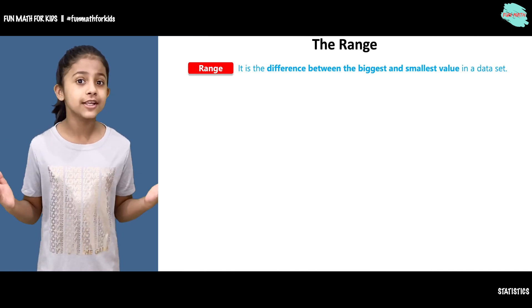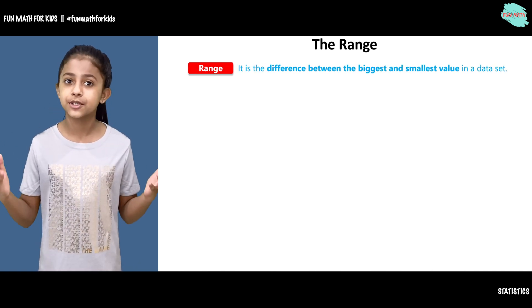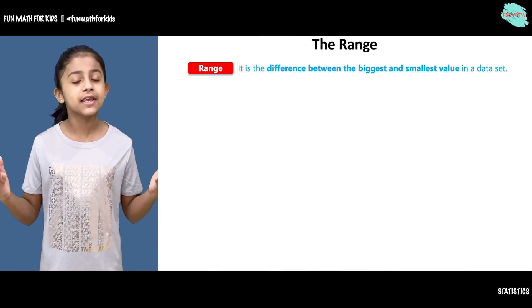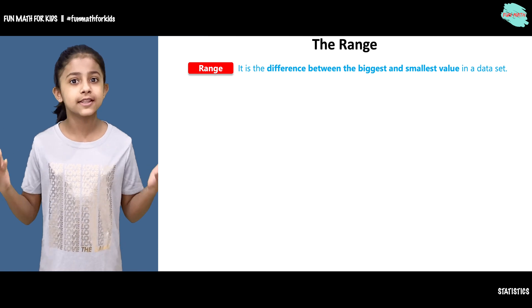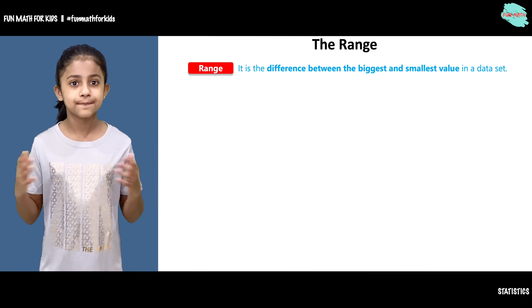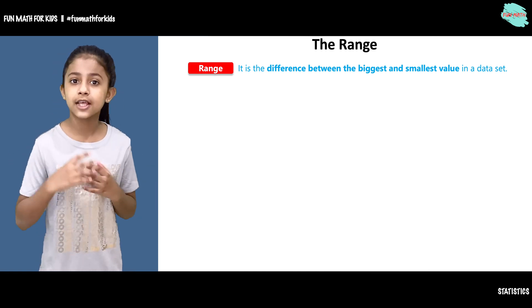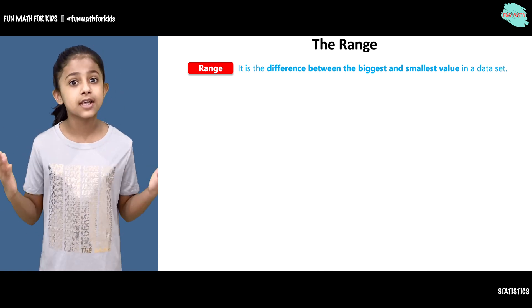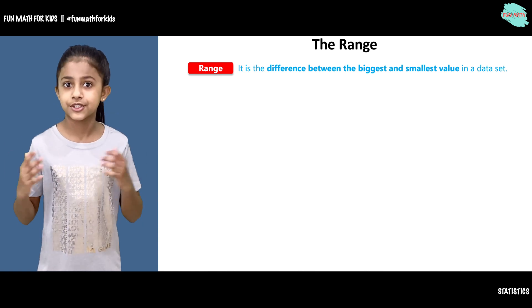So what is the range? The range is the difference between the biggest and the smallest number in the data set. Here we have two examples to help us understand what is the range.